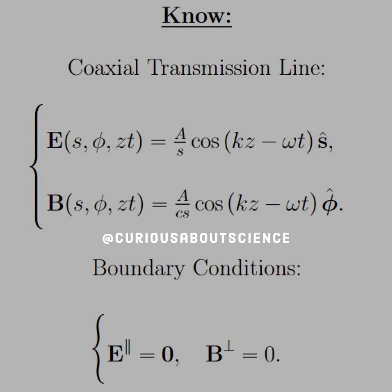B s phi z t is equal to A c over s cosine, same thing, just in the phi-hat direction. All right, and the boundary conditions that we have are E parallel equals zero and B perpendicular equals zero.